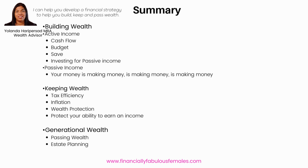To summarize the financial success framework: firstly, building wealth through active income and passive income, and mastering budgeting and saving to effectively convert active income into passive income. Second, keeping wealth — protecting our investments, preserving cash flow and appreciation, being tax-efficient, understanding the role of inflation, and protecting our sources of income. Third, passing wealth — preparing for death taxes and transferring everything to our families in the most tax-efficient manner possible.